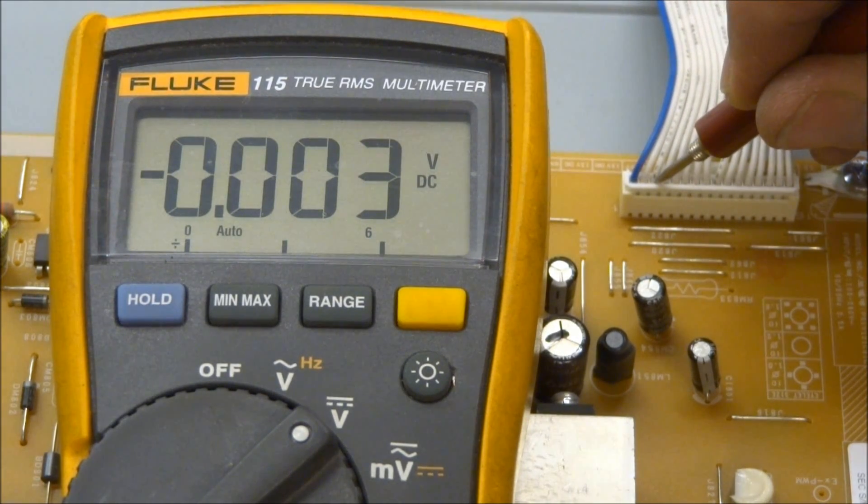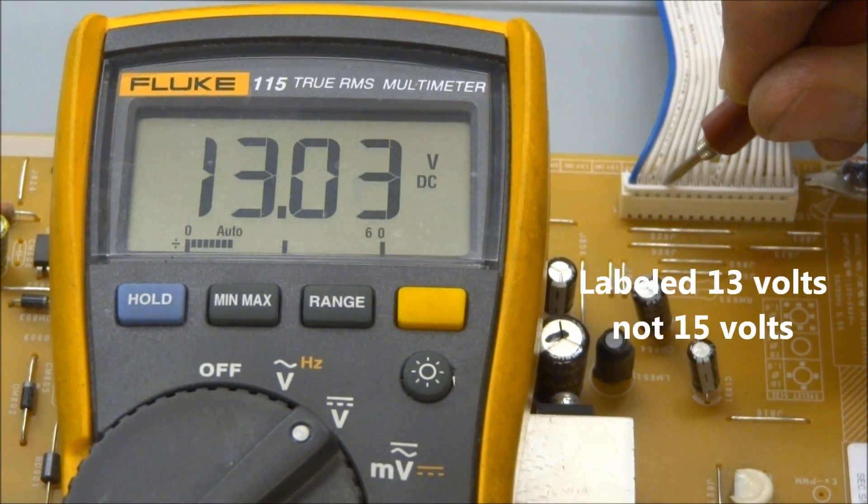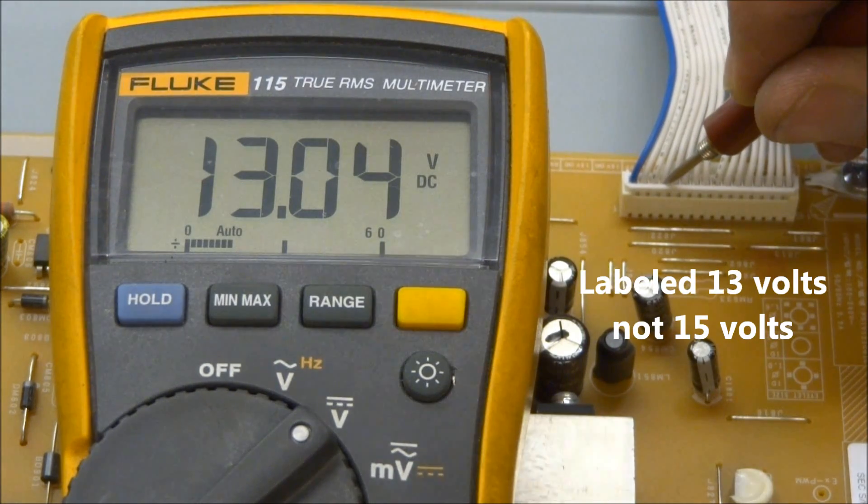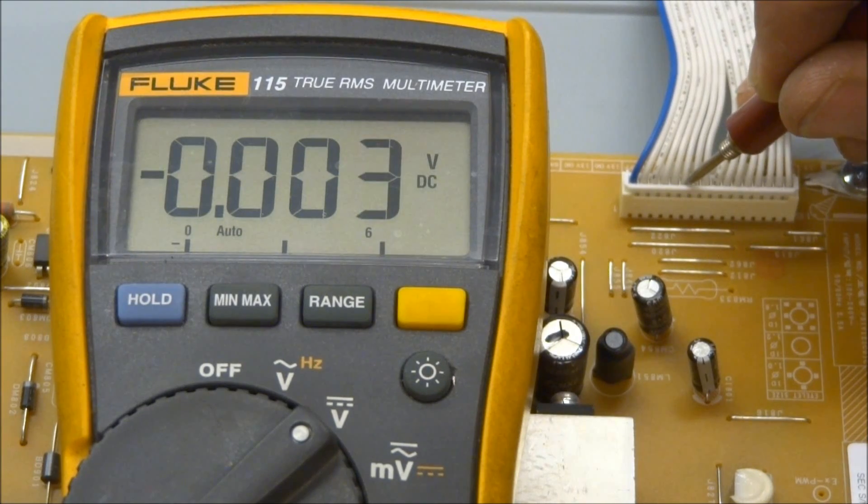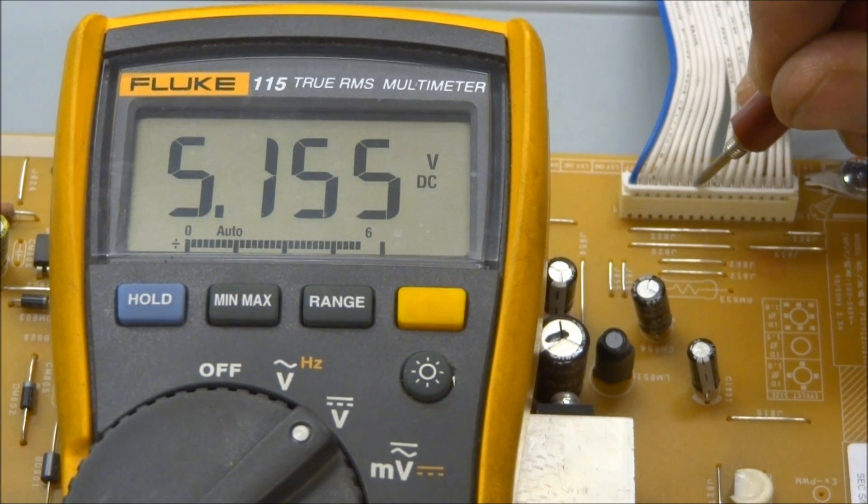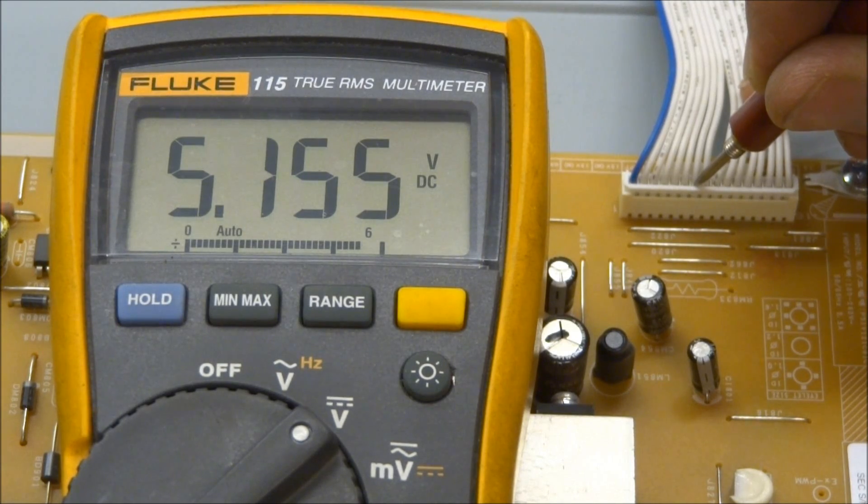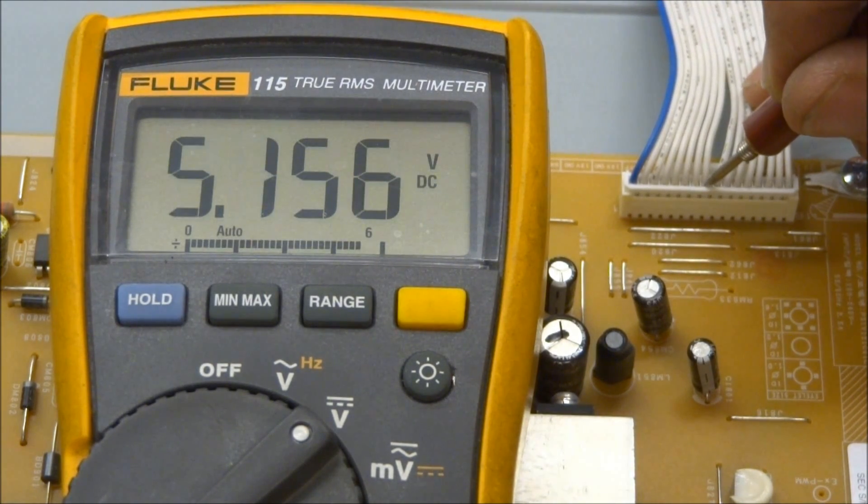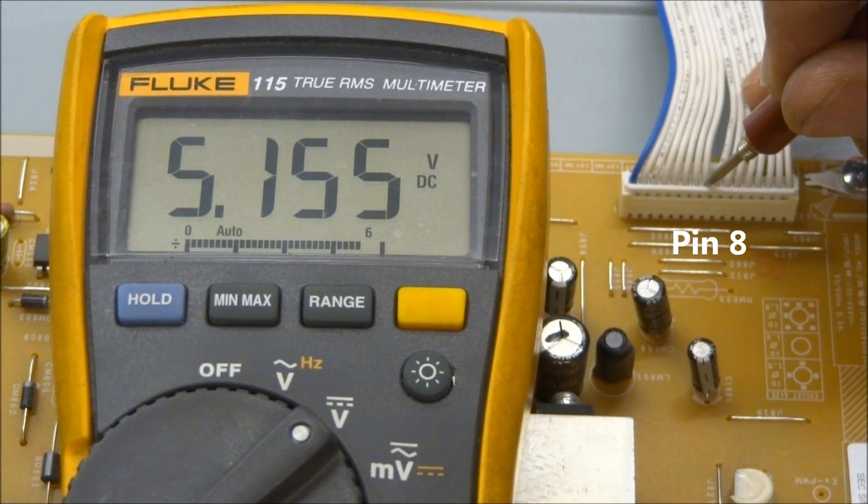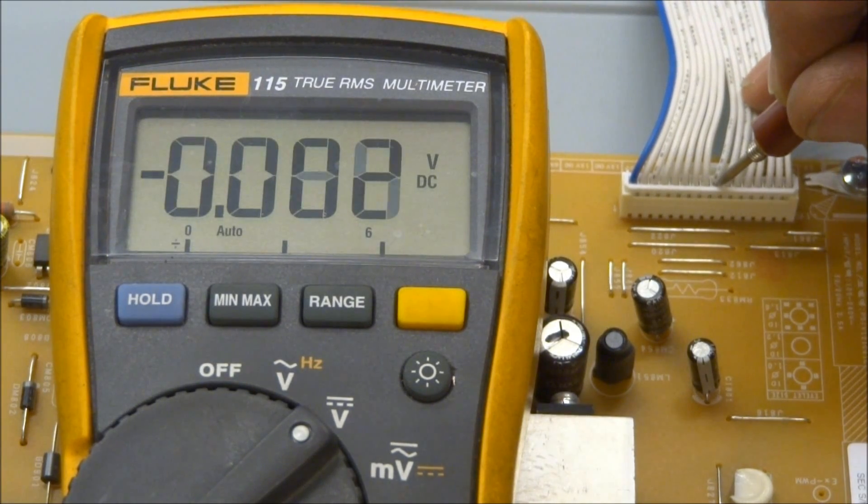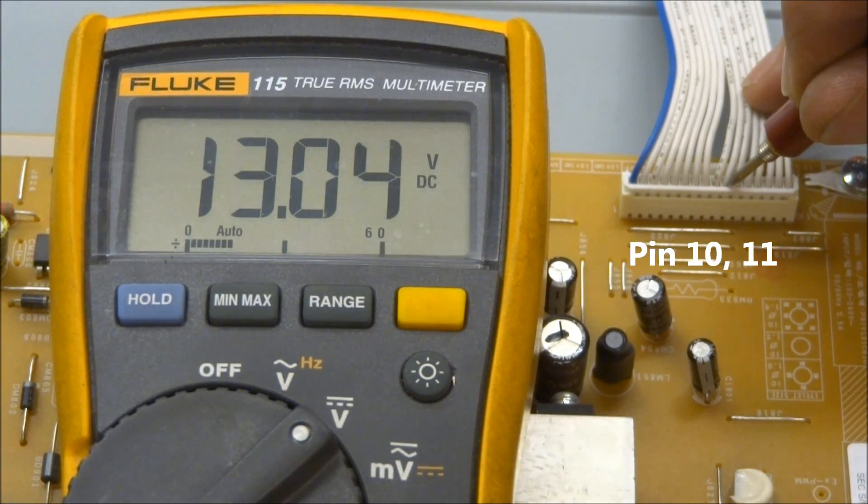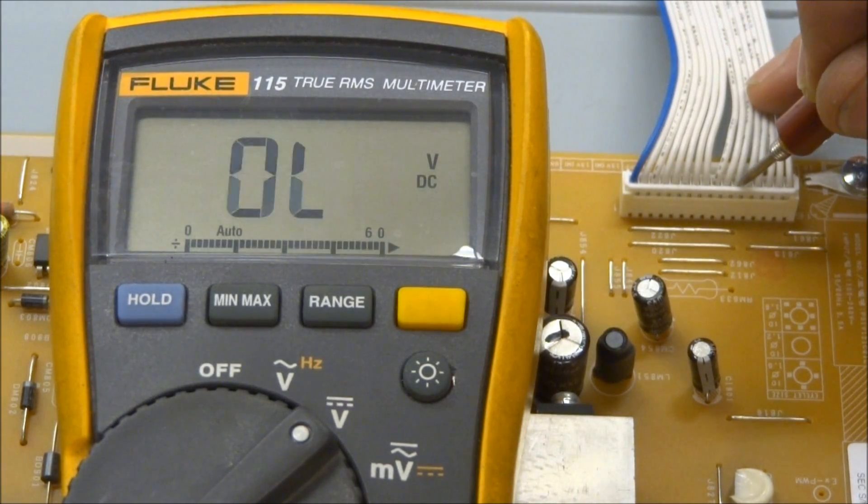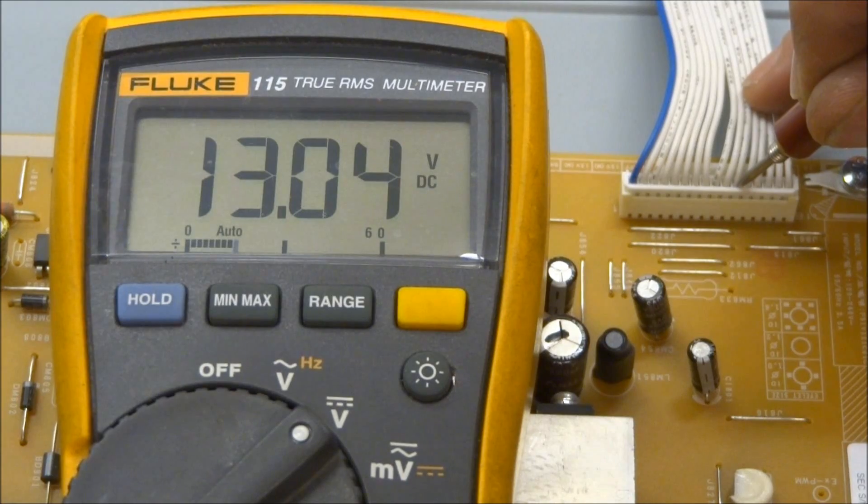Pin 3 should be ground. Pin 4 is labeled 15 volts. Pin 5 and pin 6 are both ground. Pin 7 is 5.3. Now, this is a run voltage, not to be confused with the standby. The next pin is going to be 5.3 volts as well, followed by ground. Now, our next one is going to be 13 volts, as is the following pin, 13 volts.